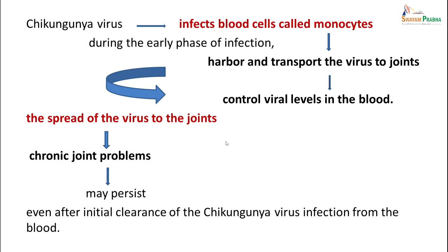Chikungunya virus infects blood cells called monocytes during the early phase of infection. These monocytes harbour and transport the virus to the joints and control the viral levels in the blood. The spread of the virus to the joints can cause chronic joint problems, which may persist even after the initial clearance of chikungunya virus infection from the blood.